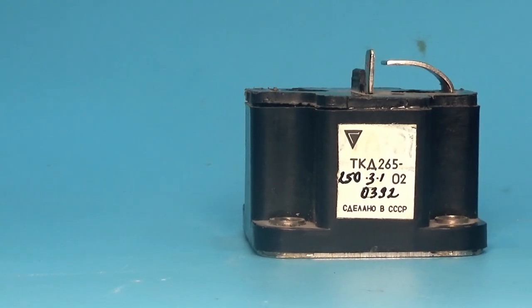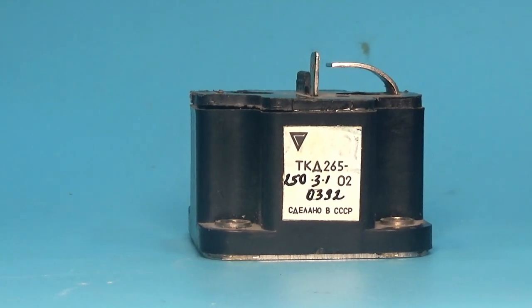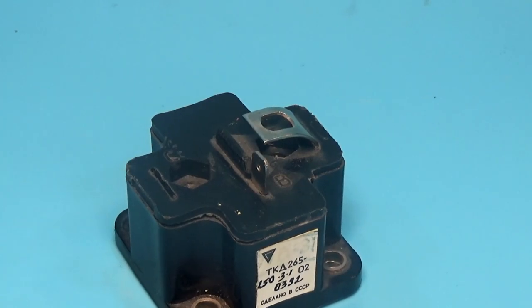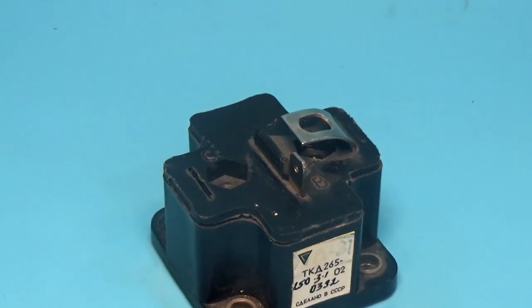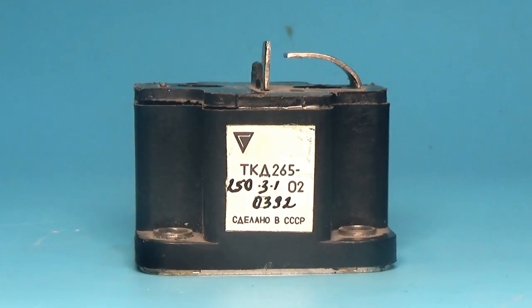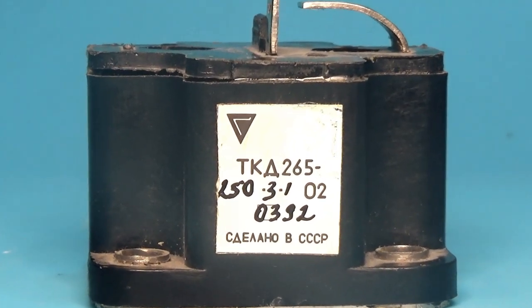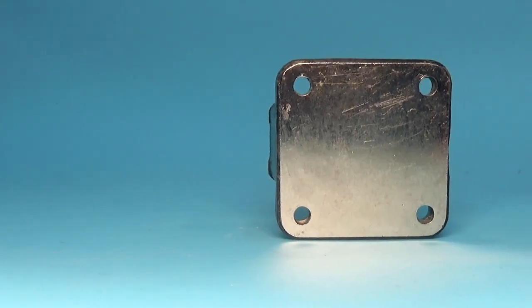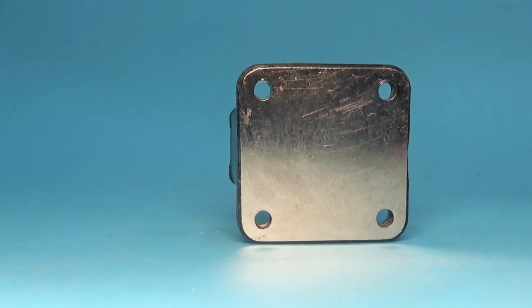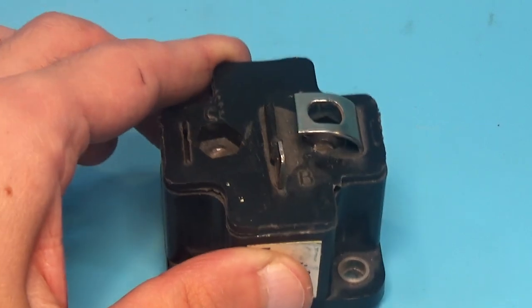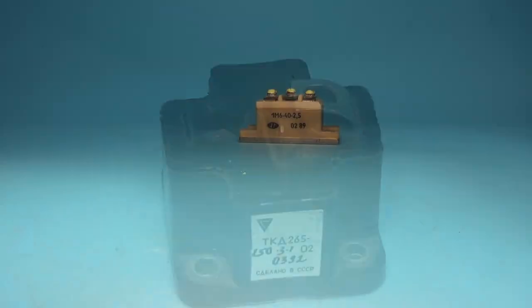What does the abbreviation TKD mean? Silicon transistor according to the Darlington circuit. 265-2 shows the serial number of the modification. 6, center-to-center distance. 5, the housing design number. Next, the number 250 shows the maximum collector current. Then we have 3, the indication of the voltage class. In our case, it is 300V. O2 is the climatic version and the category of placement according to the state standard.